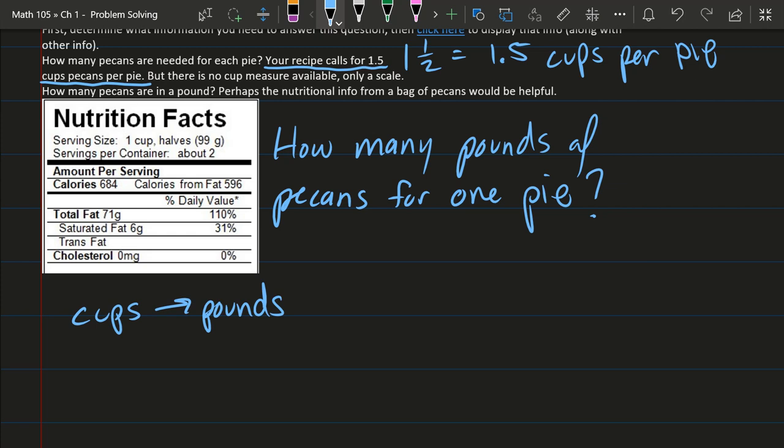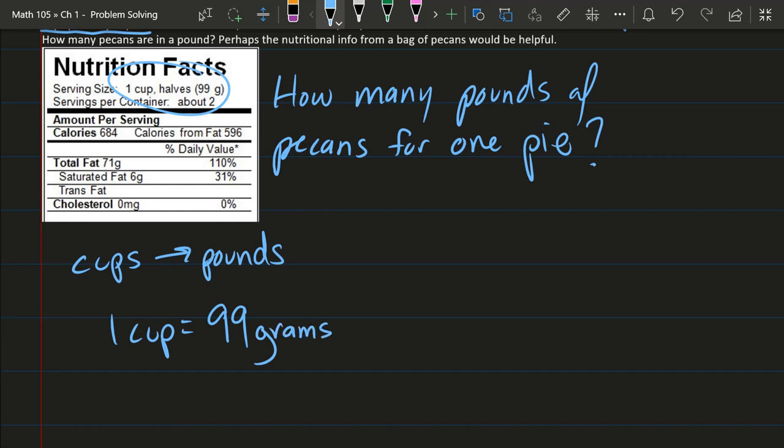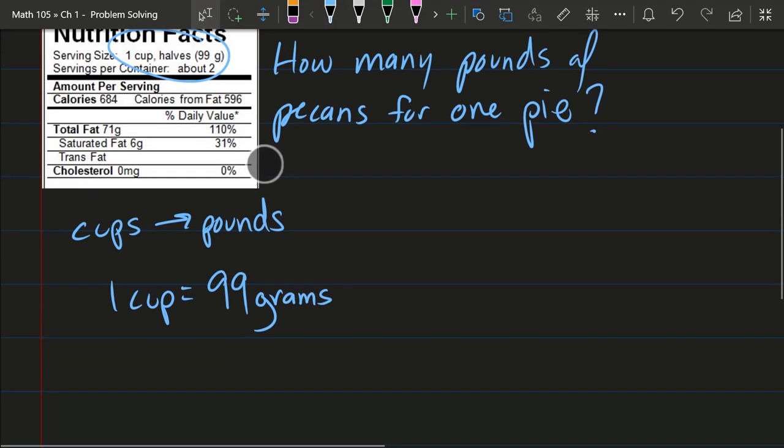And this nutrition information is going to help us do that. So I'm just writing here, 1 cup equals 99 grams. So we have significant problems here because we want to go to pounds, not to grams. So grams is a mass measurement, but it's not the right one. So I want to go from grams to pounds.